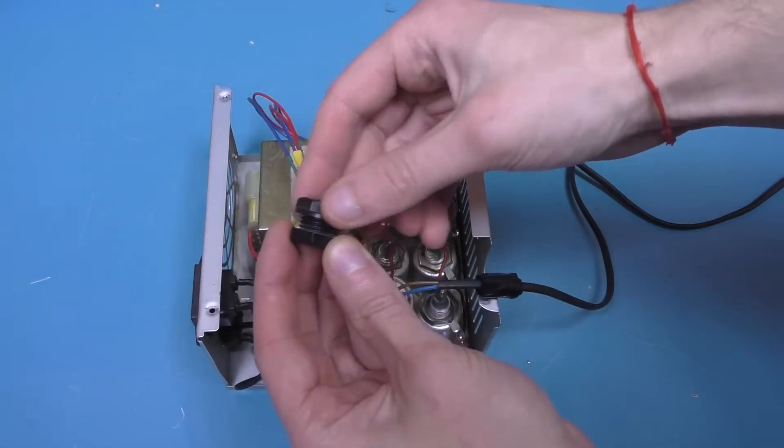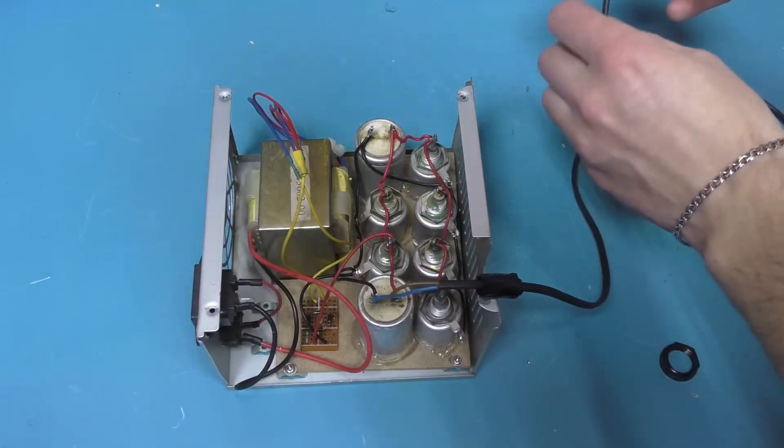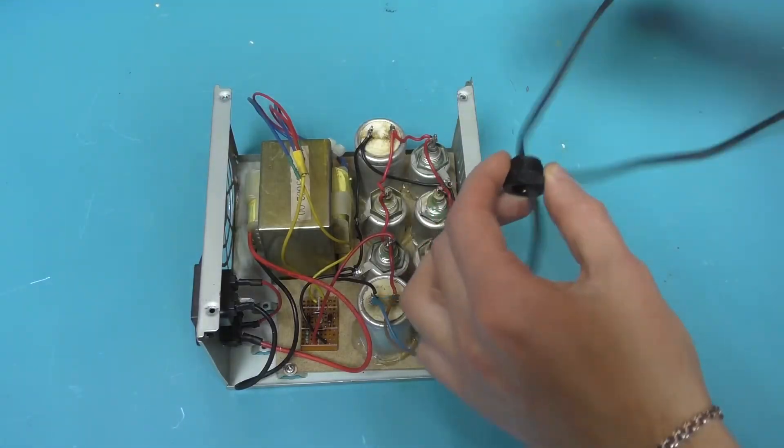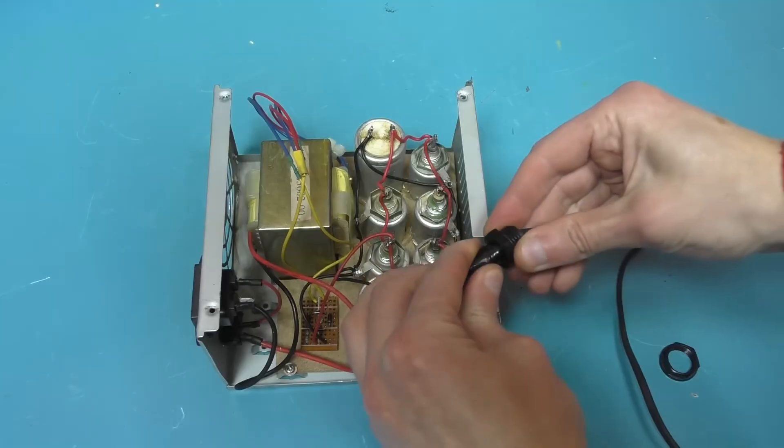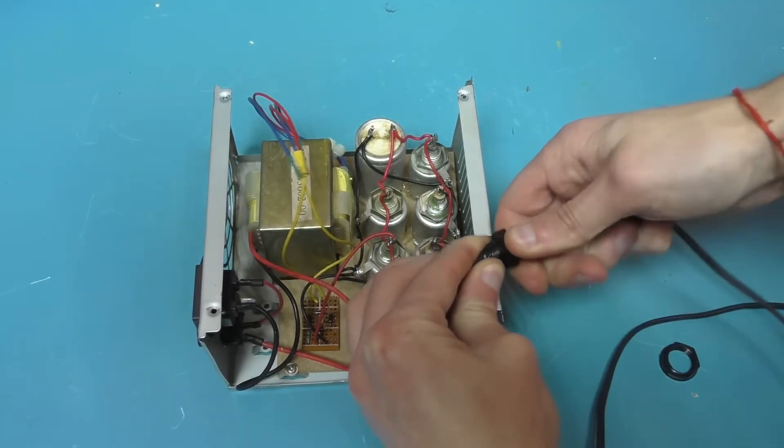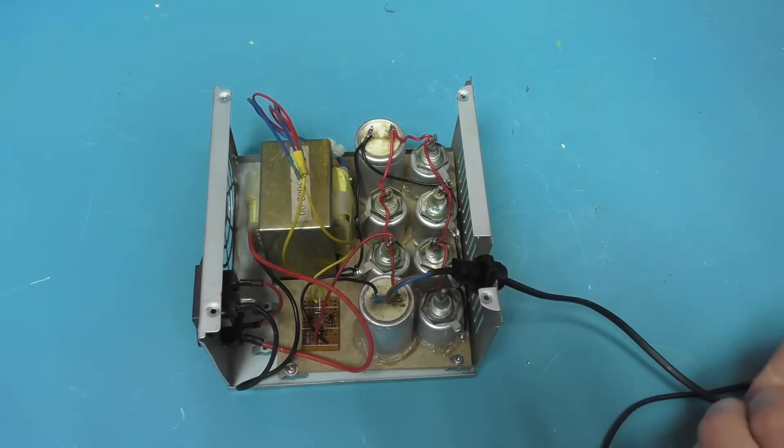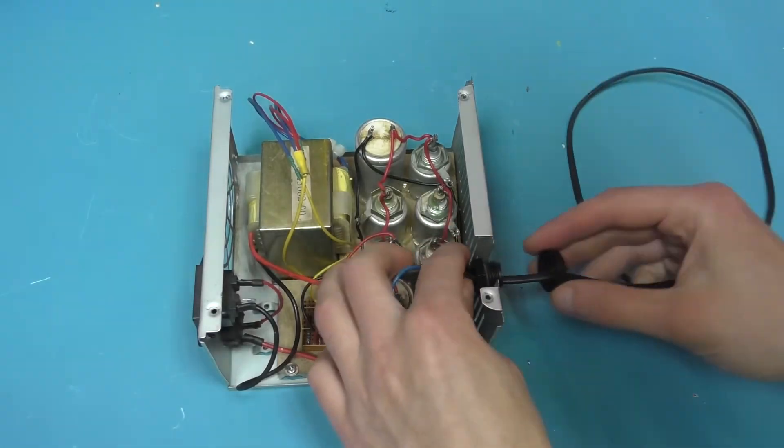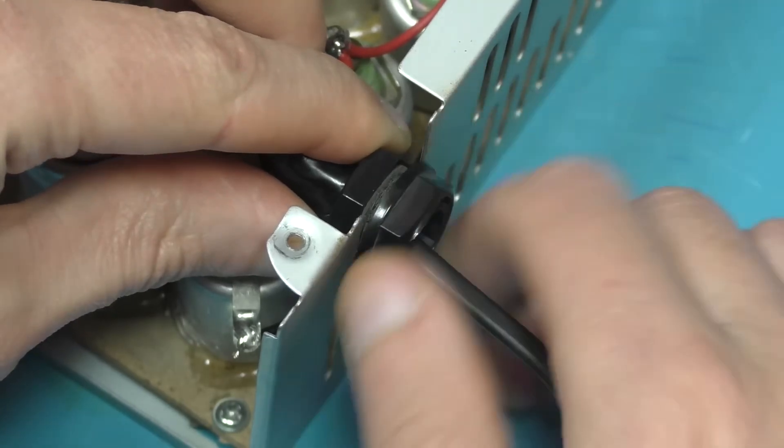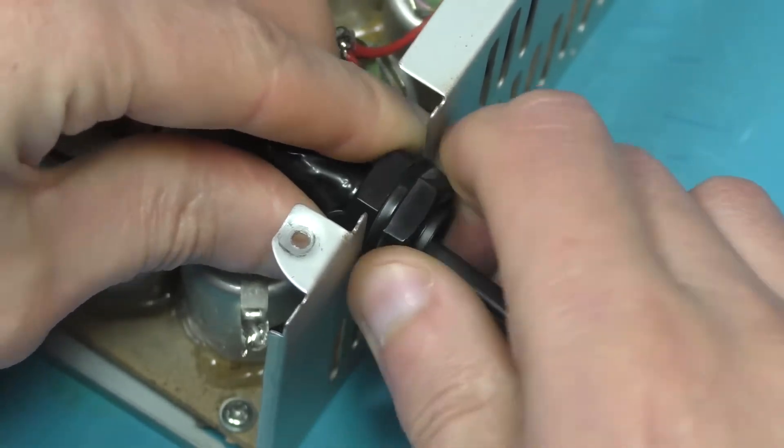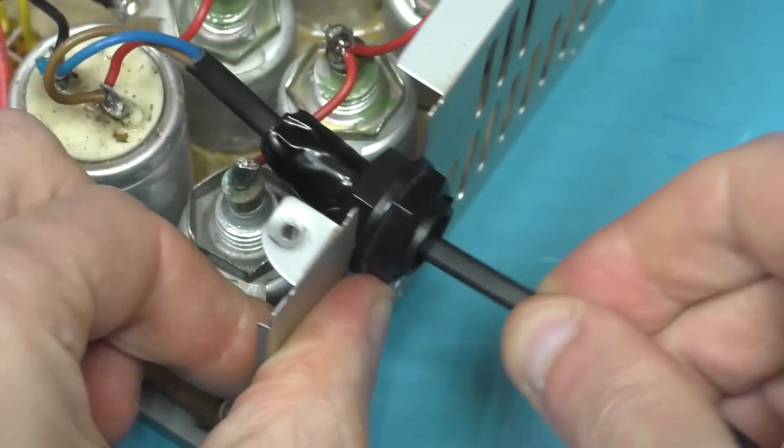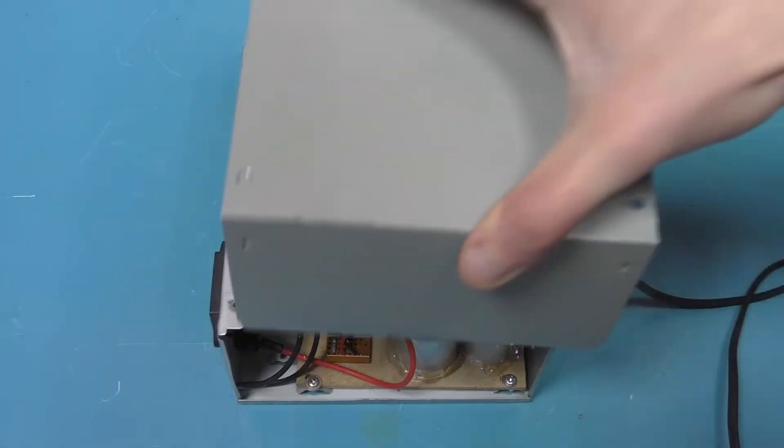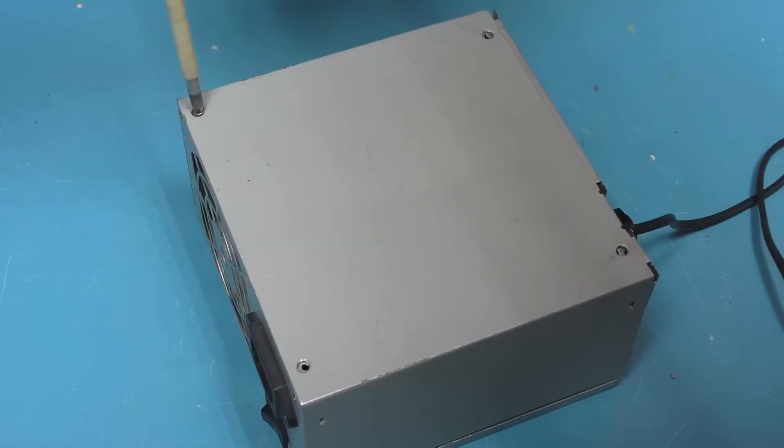Now let's take a special cable gland like this one, which will be used to secure the wire to the case, so that it doesn't accidentally get pulled out. At this point, you can close the lid.